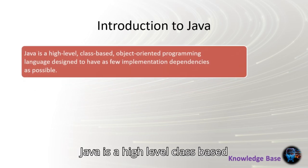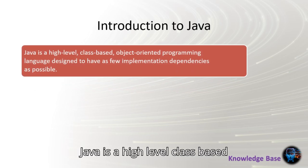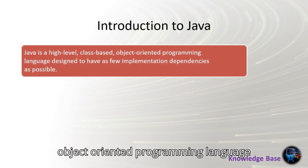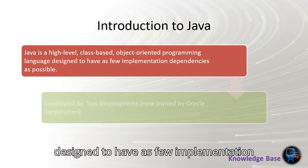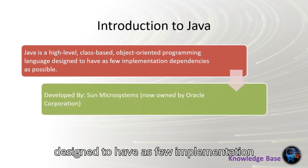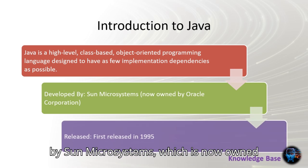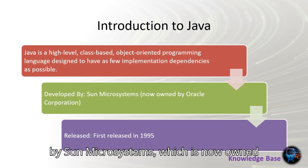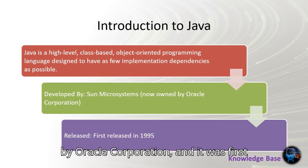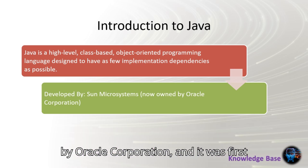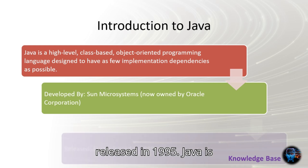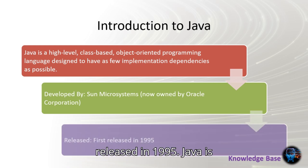Java is a high-level, class-based, object-oriented programming language designed to have as few implementation dependencies as possible. It was developed by Sun Microsystems, now owned by Oracle Corporation, and was first released in 1995.